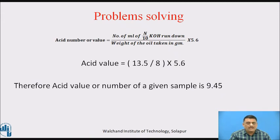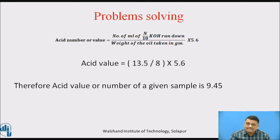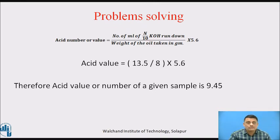Using the formula and substituting the values: acid value = 13.5 ÷ 8 × 5.6. Therefore, the acid value (also known as acid number) of the given sample is 9.45.